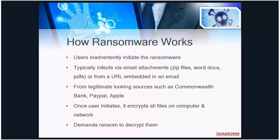So how does it work? It typically is based on a user inadvertently initiating the ransomware. In most cases it's via email, generally in one of two forms: either an attachment on the email, or a URL — a web link — embedded within the email. It has been so successful because it generally appears to come from a legitimate email — it could be from your bank, PayPal, eBay, Apple, or Dropbox. Once the user accidentally initiates the ransomware, it encrypts all the files on your computer. What's even more concerning is that if you're on a network, it will also start to encrypt the files on the file server as well.